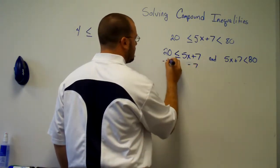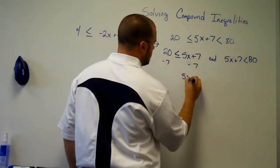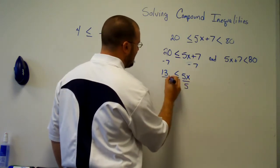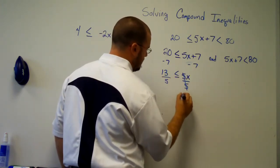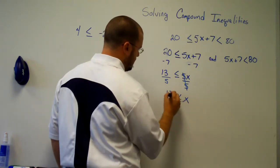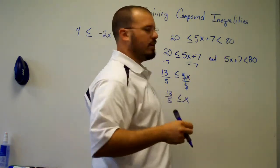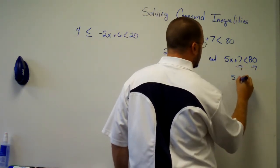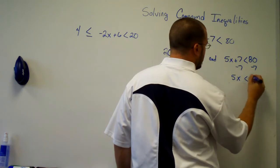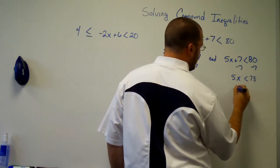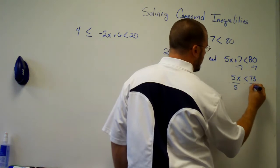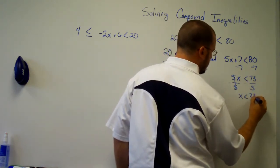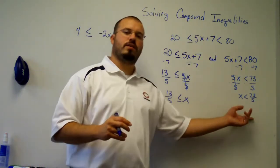Subtract 7 from both sides, then divide both sides by 5. And I need to solve the other one as well — again, subtract 7 from both sides, then divide 5 into both sides. And now I've got two inequalities as a result.